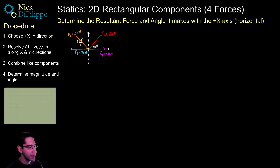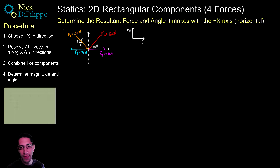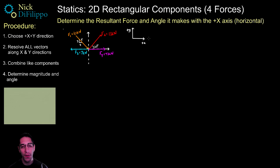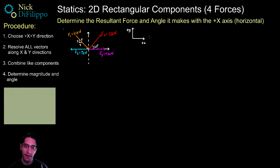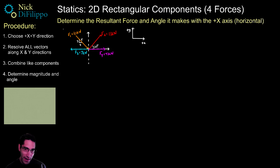Let's start at step one: choose a positive x and positive y direction. I'm going to choose up to be my positive y and to the right to be my positive x. This becomes important when putting components together. Any component pointing right is added in x; pointing left is subtracted. Any component pointing up is added in y; pointing downward is subtracted.